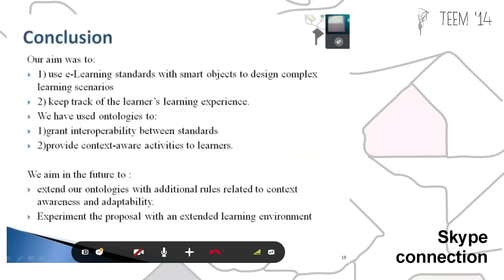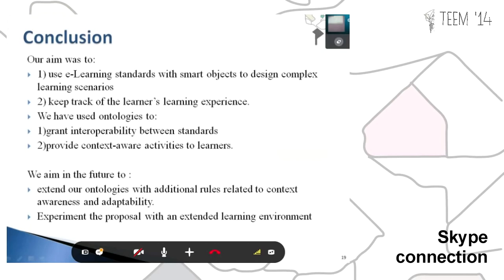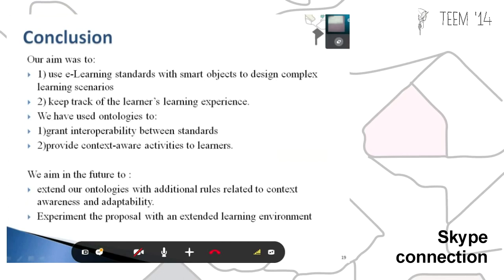Finally, in conclusion, we aim to use smart objects with certain and complex learning standards, to keep track of the learning experience with the heavy use of ontologies focused on standards, and to provide contextual activities to learners. We aim in the future to expand our ontologies with additional rules based on experience, and we have results available online.